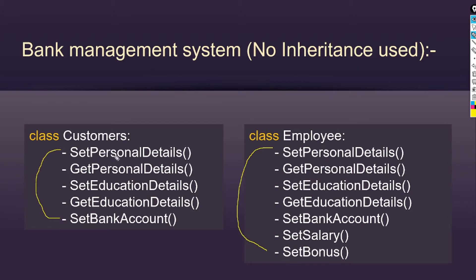Customers will have these five methods. First is set personal details — we take personal details as input from customers and this method saves those personal details in the database. Next is get personal details — a getter method that fetches the saved details from the database and prints them. Third is set education details — education details are taken as input and saved to the database. Fourth is get education details — a getter method that fetches education details from the database.